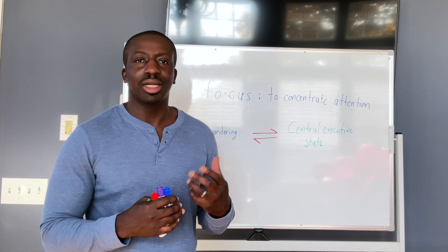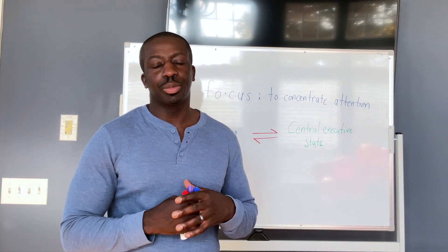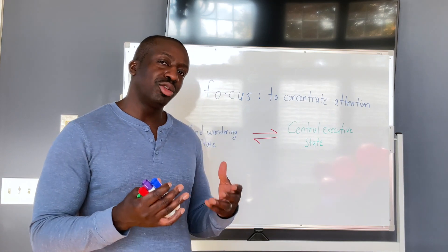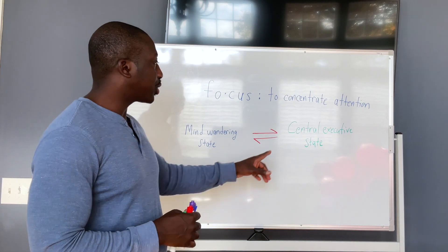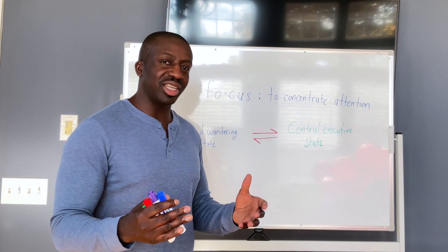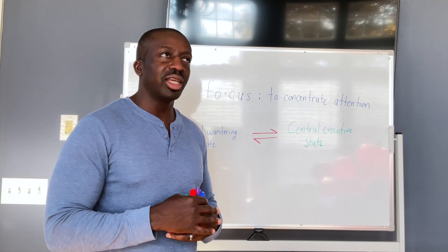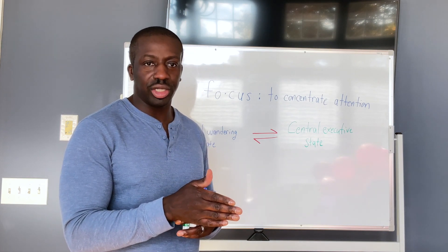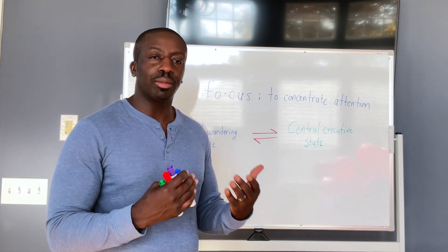First thing to understand when it comes to focus is that the brain has different states. Two of those states are particularly important when it comes to how children sit down and direct attention to work. The two general states: one is considered the mind wandering state, and the other is considered the central executive state. The mind wandering state is oftentimes what you see with children when you're trying to get them to do work — their mind is just jumping from one topic to the next, they're distracted by things in their environment, unable to direct attention to the work at hand. This mind wandering state actually promotes a lot of creativity.